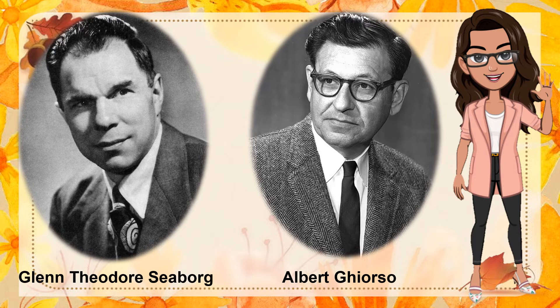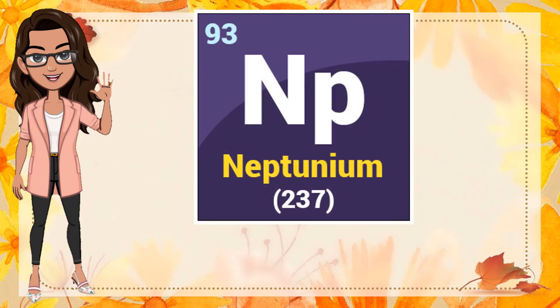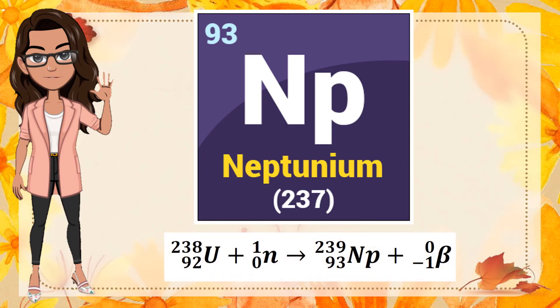As for the heavier transuranium elements, from 96 to 101, they were generally prepared with high-energy positive ions, which include the use of deuterons, carbon nuclei, and ions. The first transuranium element was identified by Edwin McMillan and Philip Abelson in 1940. It was named neptunium, bearing an atomic number of 93. They acquired the radioactive isotope of neptunium through the bombardment of uranium oxide with slow neutrons, as represented in the slide.